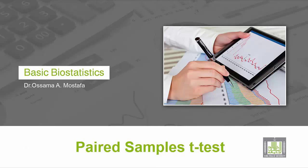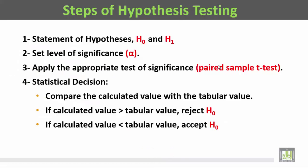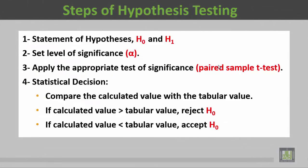In order to answer the research question, we are going to follow the same steps of hypothesis testing: first, the statement of the hypotheses H-naught and H1; second, to set the level of significance alpha; third, to apply the appropriate test of significance, which is the paired sample t-test; and finally, the statistical decision by comparing the calculated value with the tabular value.